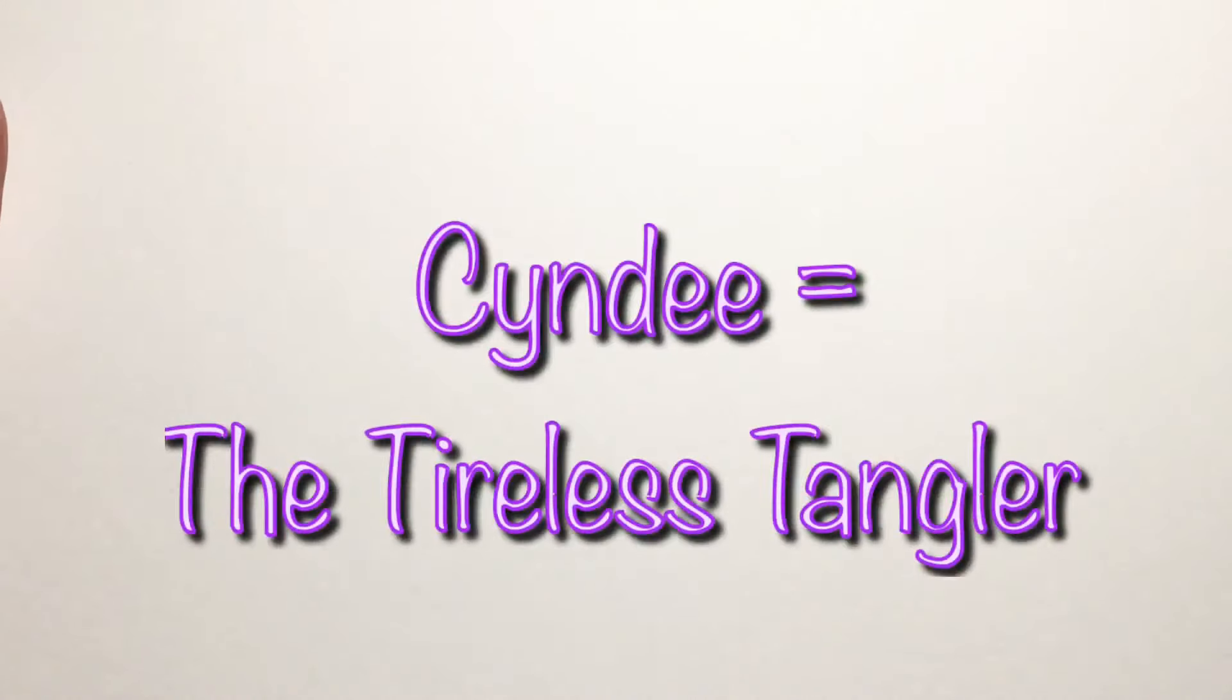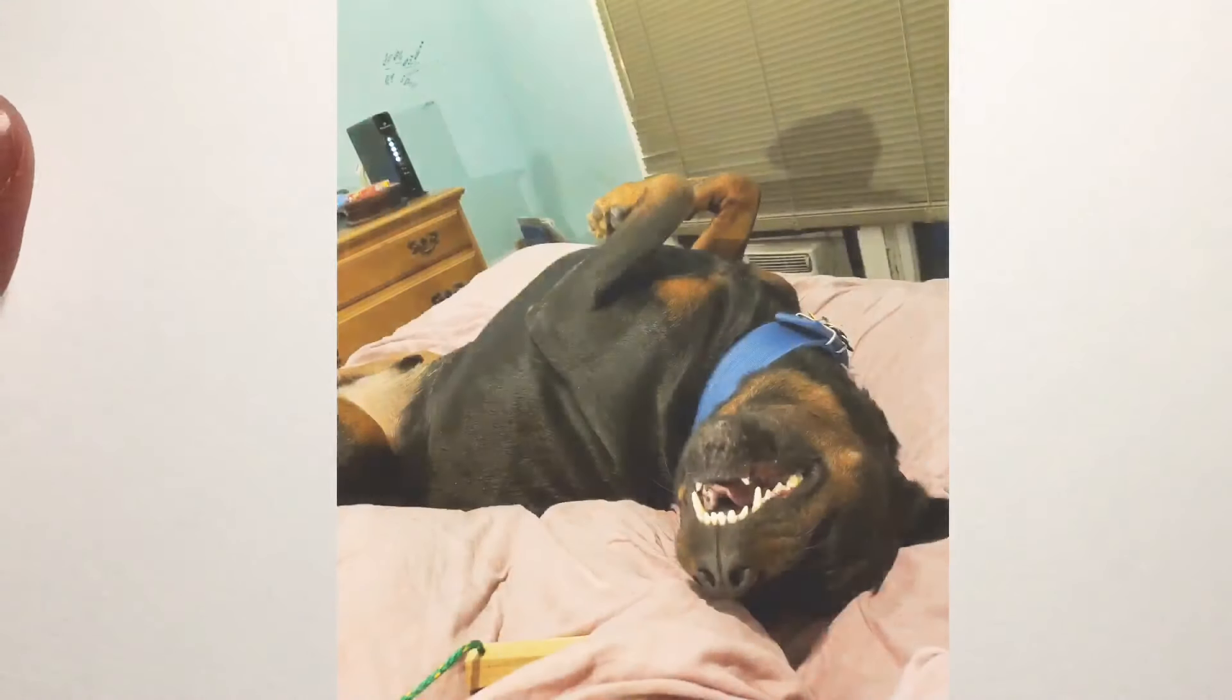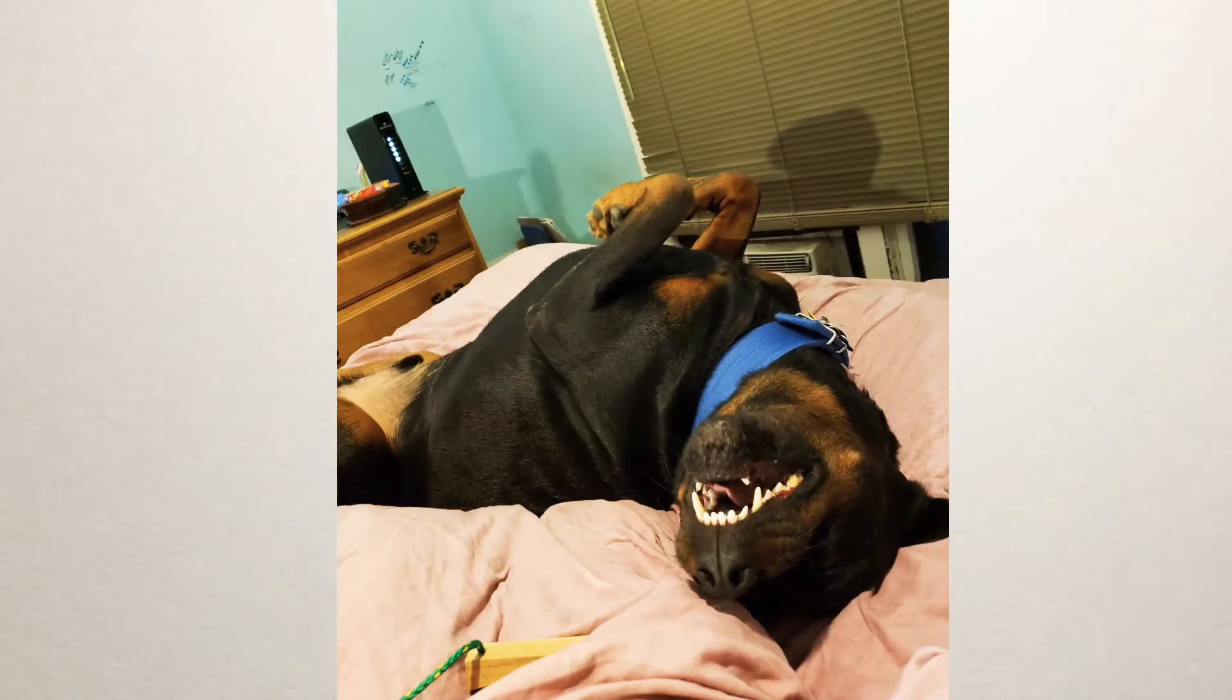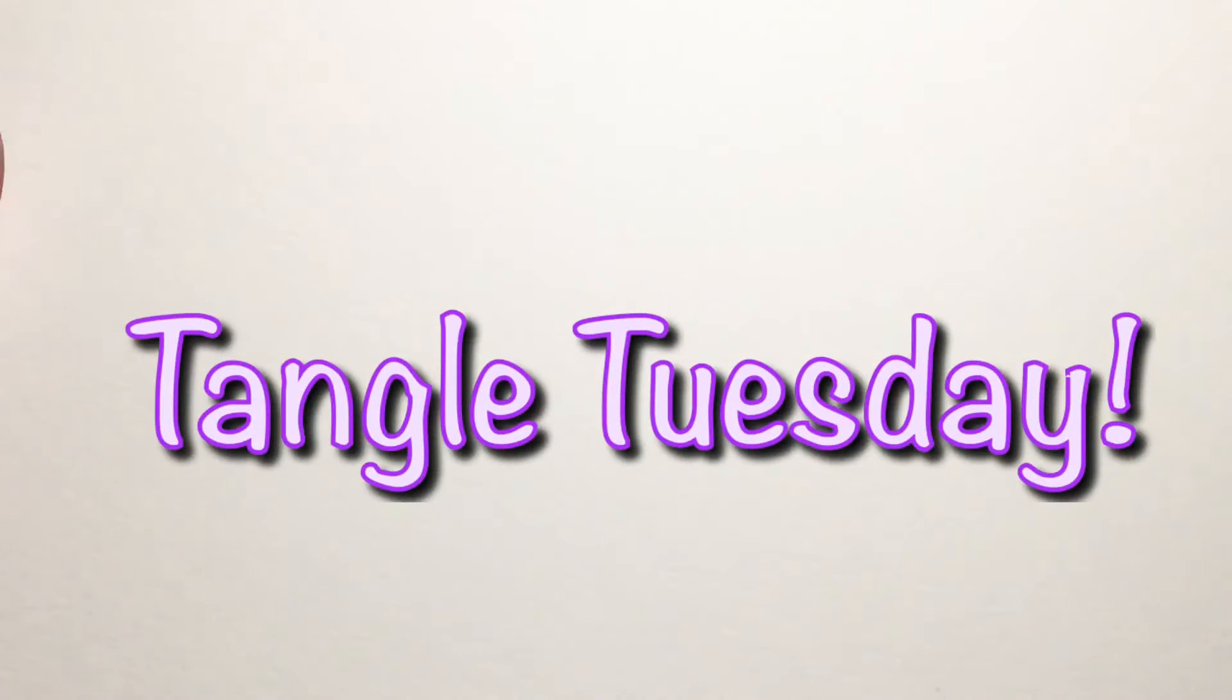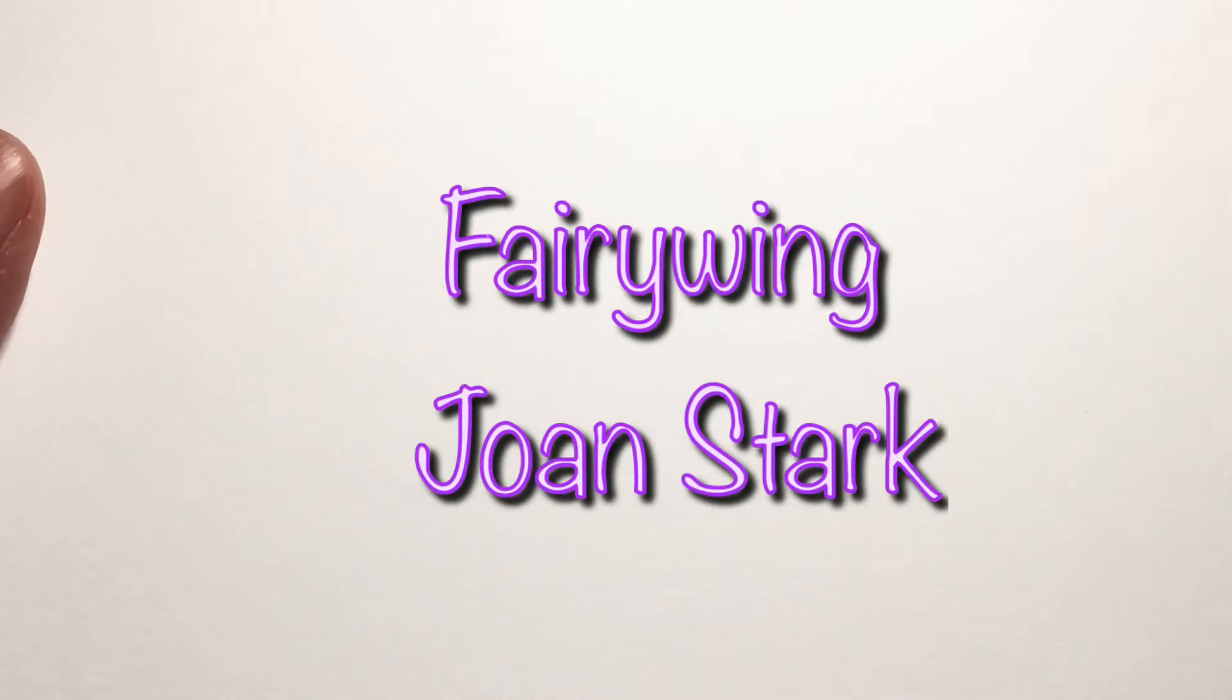Hey y'all, this is Cindy, I'm the Tireless Tangler. I'm here with my friend Simba and thank you all for being with us today. You've arrived at Tangle Tuesday. Simba says woof to all of you doggie and kitty pals. Let's get started. Today's tangle is going to be a really pretty one, it's called Fairy Wing and it is by Joan Stark. I believe she's from Ohio. As always, the step out for this can be found on tanglepatterns.com.